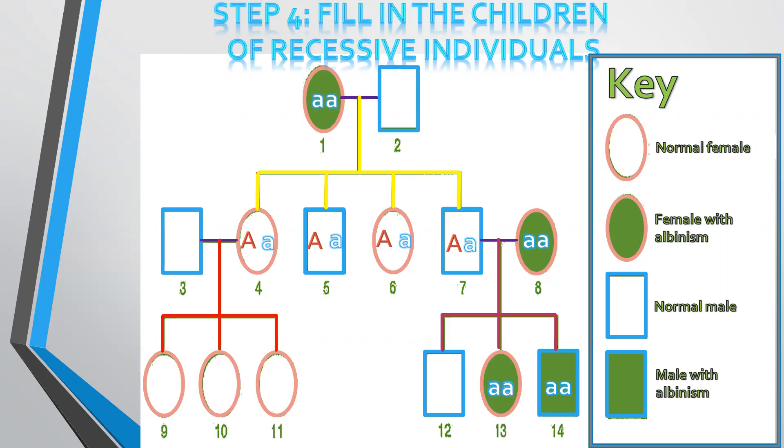Then if you look at number eight, she has the offspring number 12. Number 12 also, in a similar way, had to inherit one allele from the father, which is normal, and the other allele would have come from the mother number eight. And this makes number 12 also heterozygous. So all of the offspring of a recessive individual that are having the dominant phenotype will always be heterozygous.